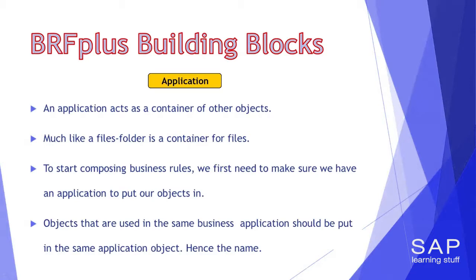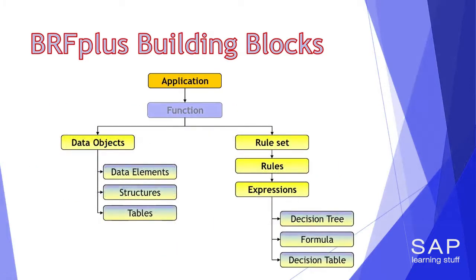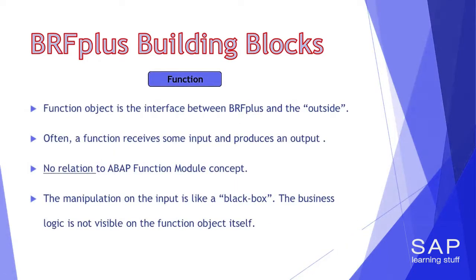Next in line is the function object. The function object is much more interesting than the rather dull application. In fact, the function object is one of the most interesting objects in the realm of BRF Plus, as it has the honor of being the intermediate object between BRF Plus and whatever external process that wants to consume a BRF Plus rule. Just a word of warning for the ABAPers among you — please don't confuse the BRF function object and the ABAP function module. They are not the same thing. As there is an entire lecture devoted to the function object, we will not elaborate on that object type just yet.